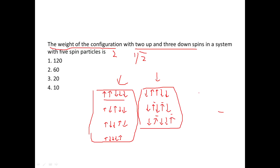Now with the first two down, we can have three and four up, and three and five up, with the rest down. We don't take three and two because two and three is already covered, and three and one is also already taken. So that adds two more ways.